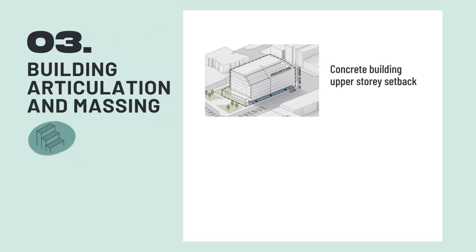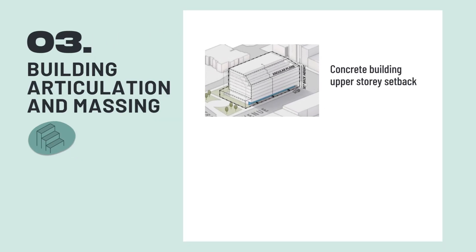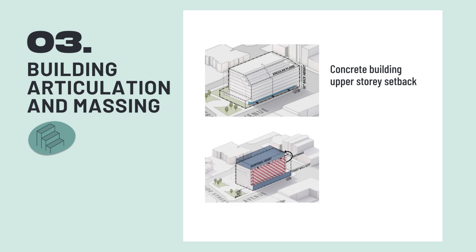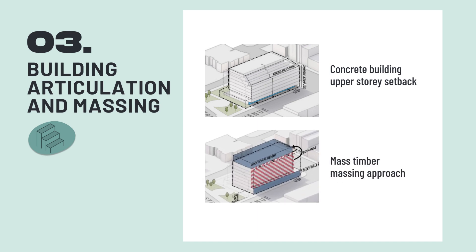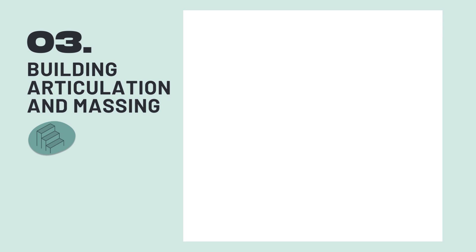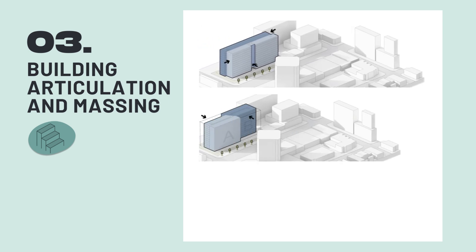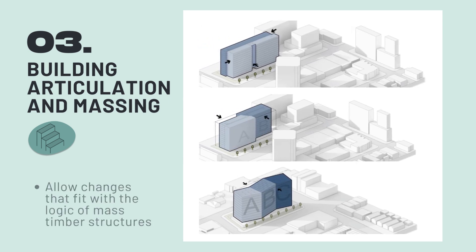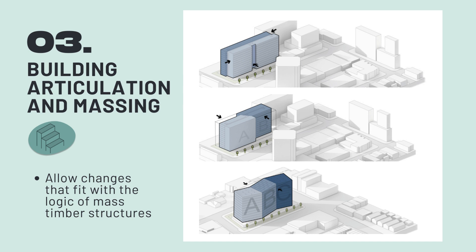Official community plans often request upper story setbacks and facade breaks so the building looks less bulky and imposing. This can be difficult and expensive to achieve with mass timber builds, as they rely on repetitive stacking of structural elements. Guidelines should allow designers to use simpler changes that fit with the logic of timber structures, such as large scale, singular or rational moves, rather than requiring complex and costly adjustments.